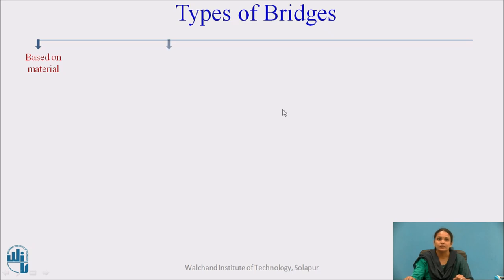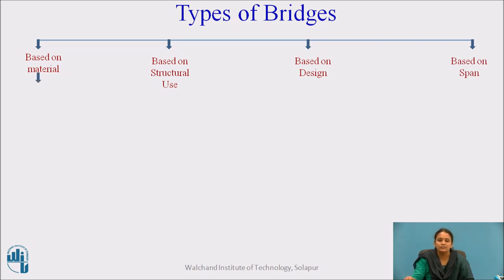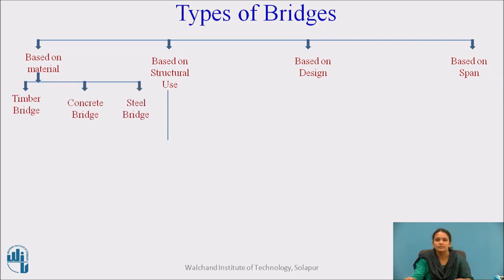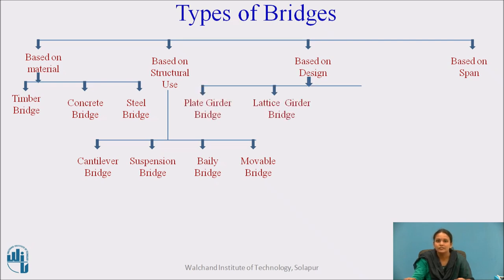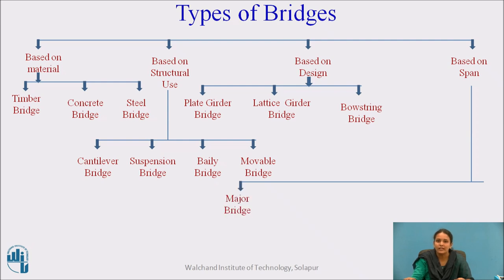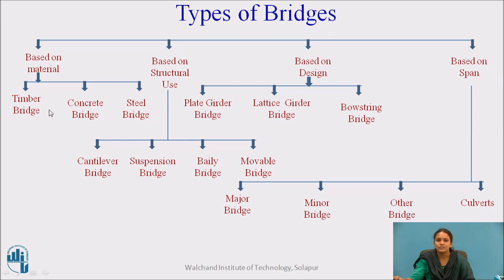These are the various types of bridges. Bridges are classified based on material, structural use, design and span. Based on material: timber bridge, concrete bridge and steel bridge. Based on structural use: cantilever bridge, suspension bridge, belly bridge and movable bridge. Based on design: plate girder bridge, lattice girder bridge and busting bridge. Based on span: major bridge, minor bridge, other bridges and culverts.